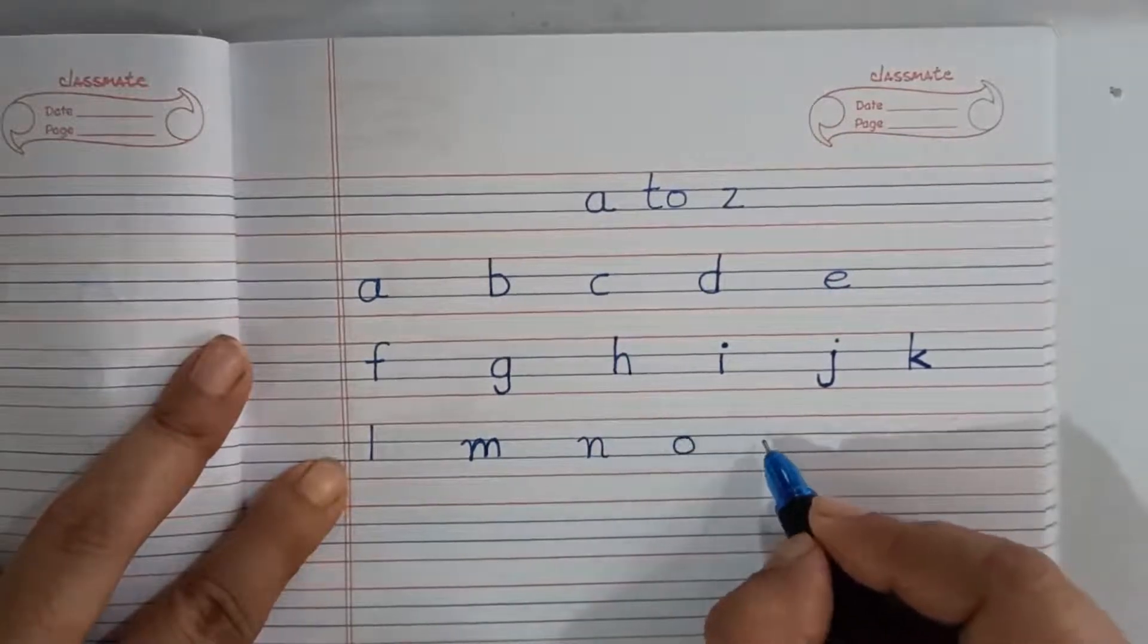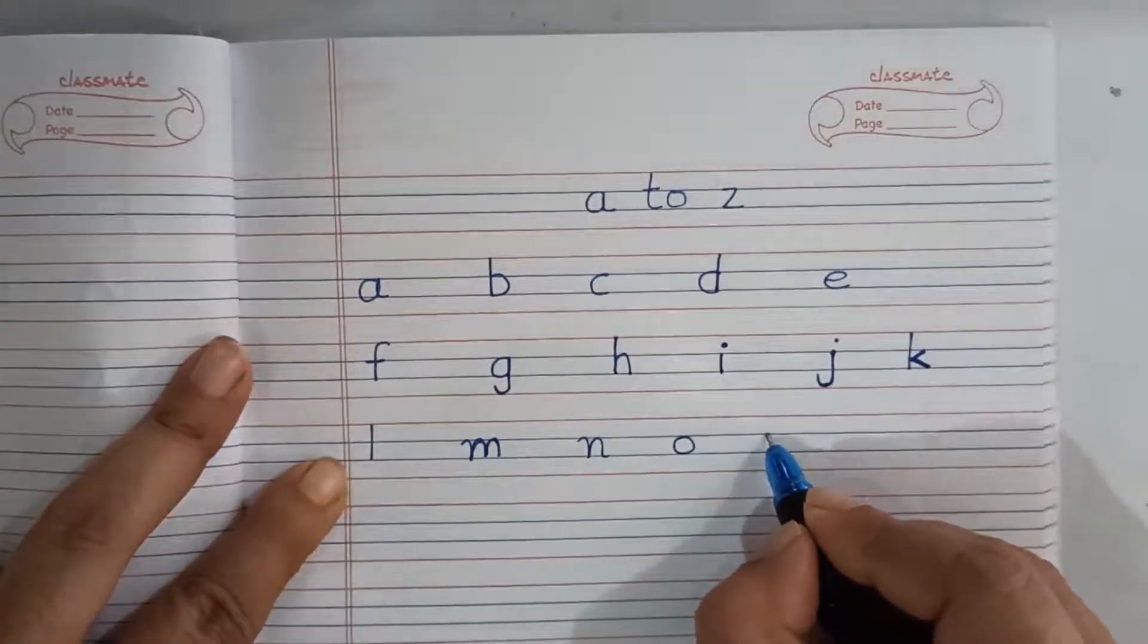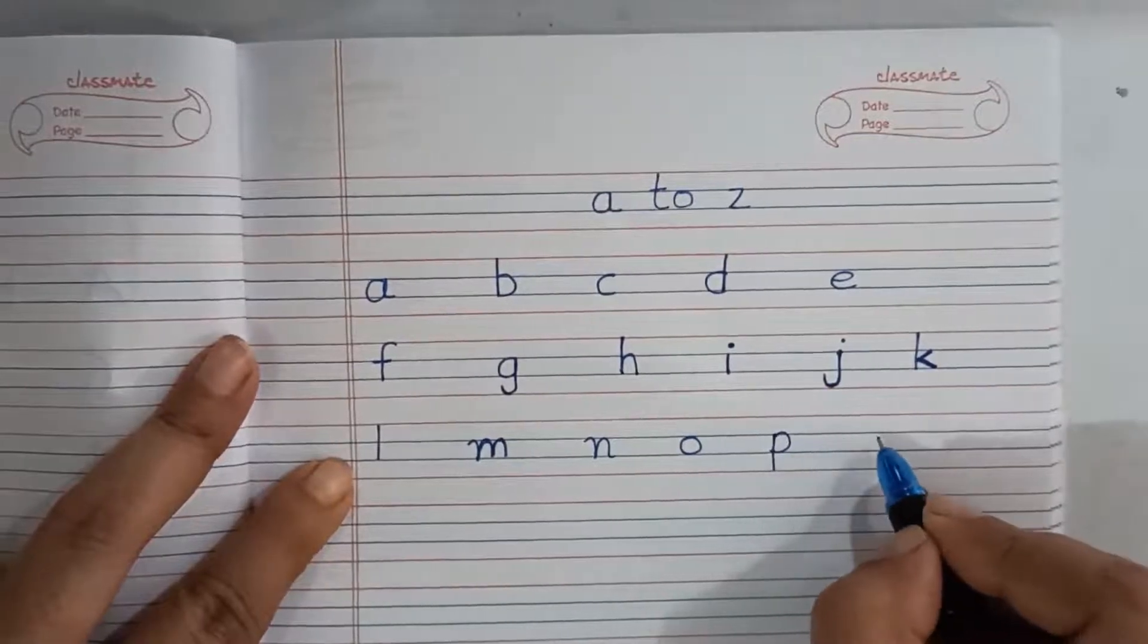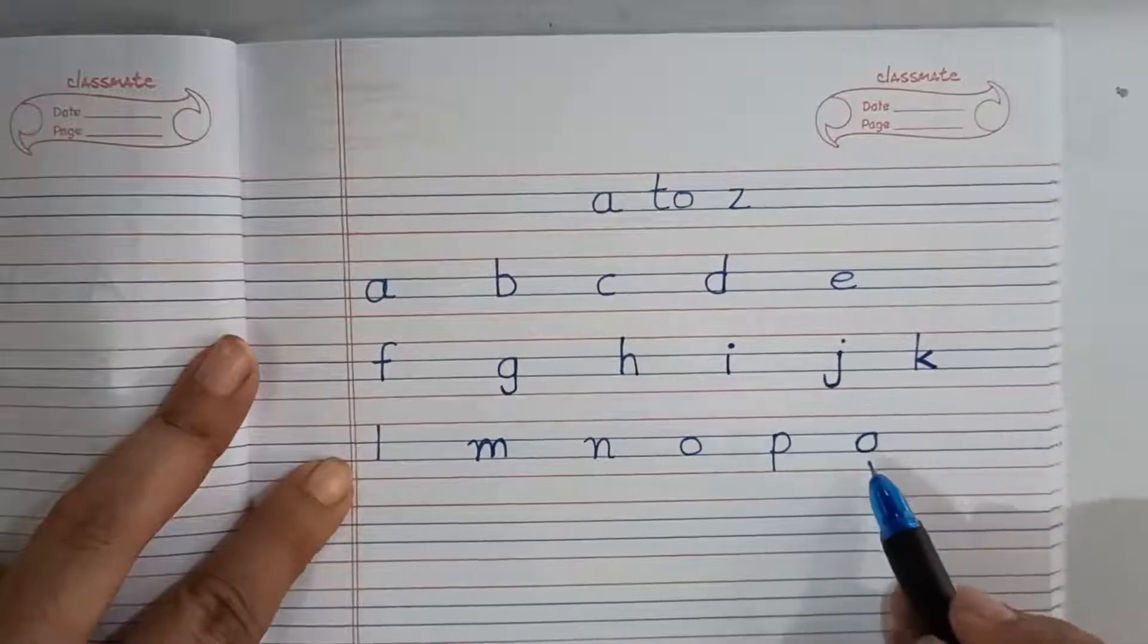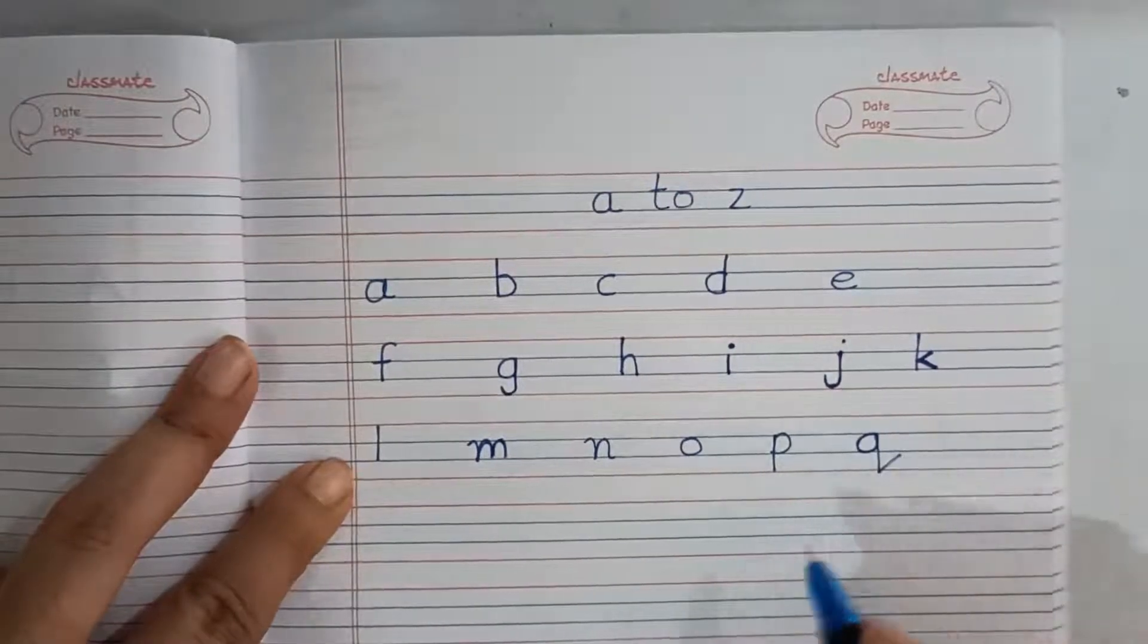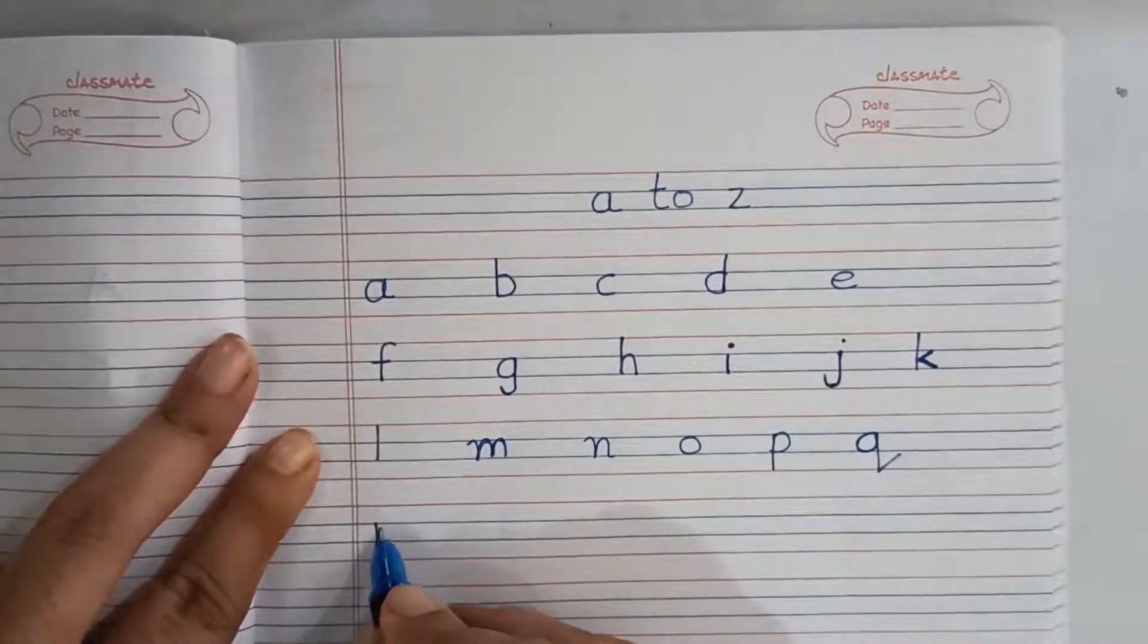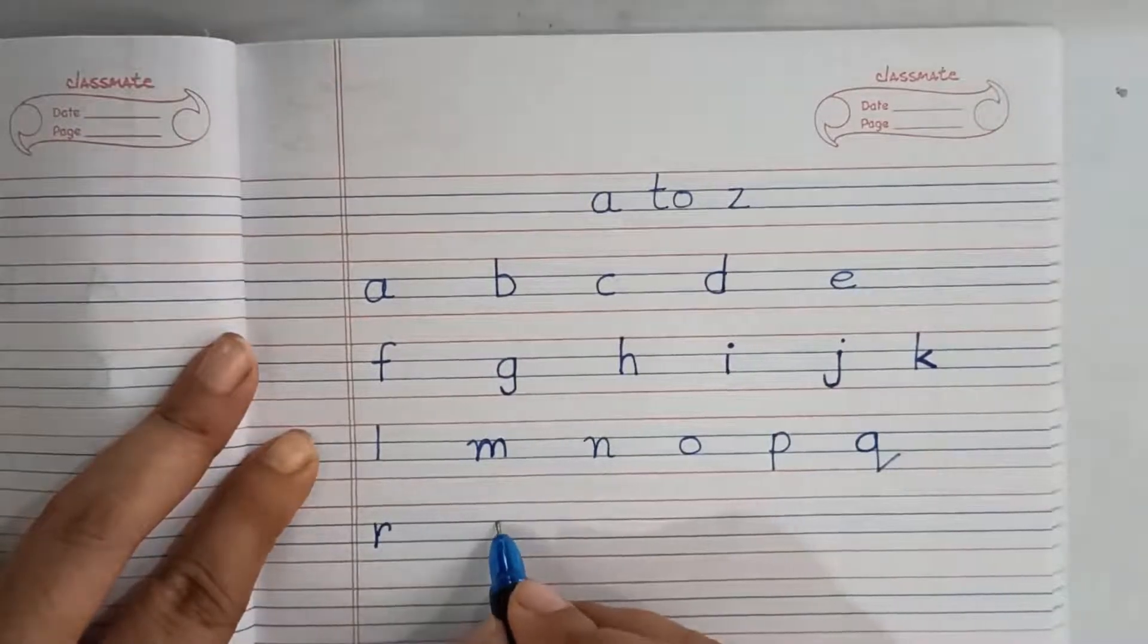Then P, we are starting it from blue line to red line. Then Q, we are starting it from blue line, one standing line and slant. Then R, blue line, small standing line and little bit of curve.